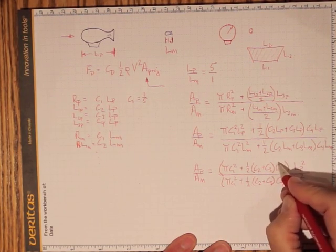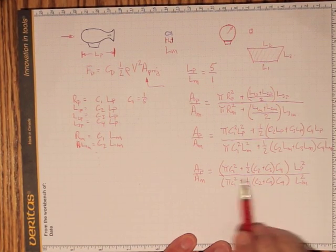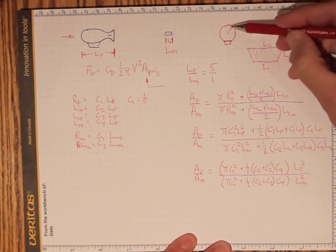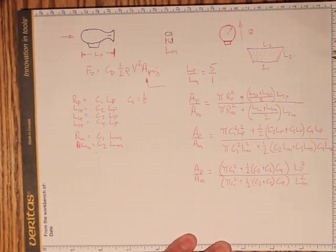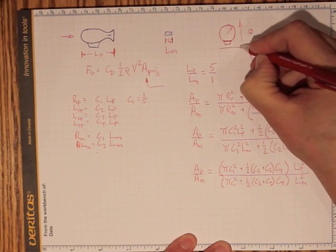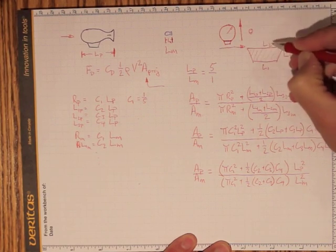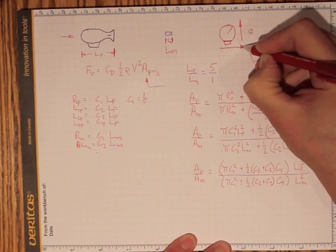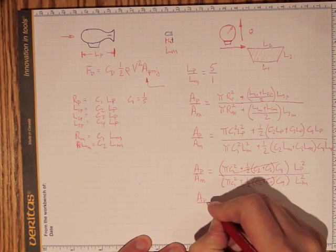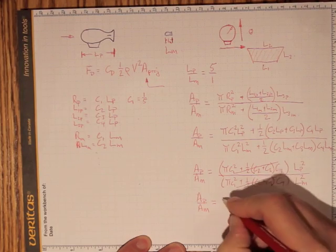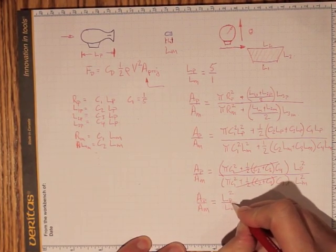Well, these constants all come from just what is the shape of this thing. No matter how complicated the shape, all of the dimensions in this direction are going to depend on the length of the prototype or the length of the model. All the dimensions likewise are going to scale that way, so we're always going to be multiplying something proportional to the length of the prototype by something else proportional to the length of the prototype to get the area. That cancels out. The area of the prototype to the area of the model must be equal to the length of the prototype — the characteristic length — squared, divided by the length of the model squared.